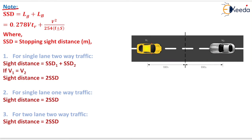Stopping sight distance equals lag distance plus braking distance: SSD = 0.278·V·TR + V²/[254(f ± S)]. The plus sign is used when the vehicle is moving up the gradient and the minus sign when moving down the gradient.